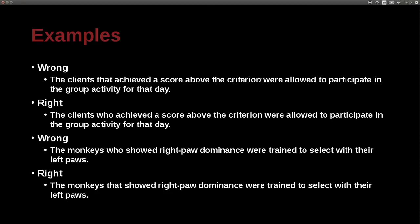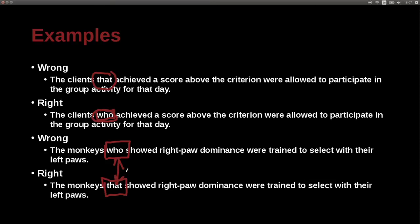'The clients that achieved the score above the criterion were allowed to participate in the group activity' — 'that' is wrong; the correct version uses 'who': 'the clients who achieved the score.' We use 'who' because we're talking about people. Conversely, 'the monkeys who showed right paw dominance' is wrong — it should be 'the monkeys that showed right paw dominance,' because monkeys are not people, so they cannot be 'who'; it must be 'that.'